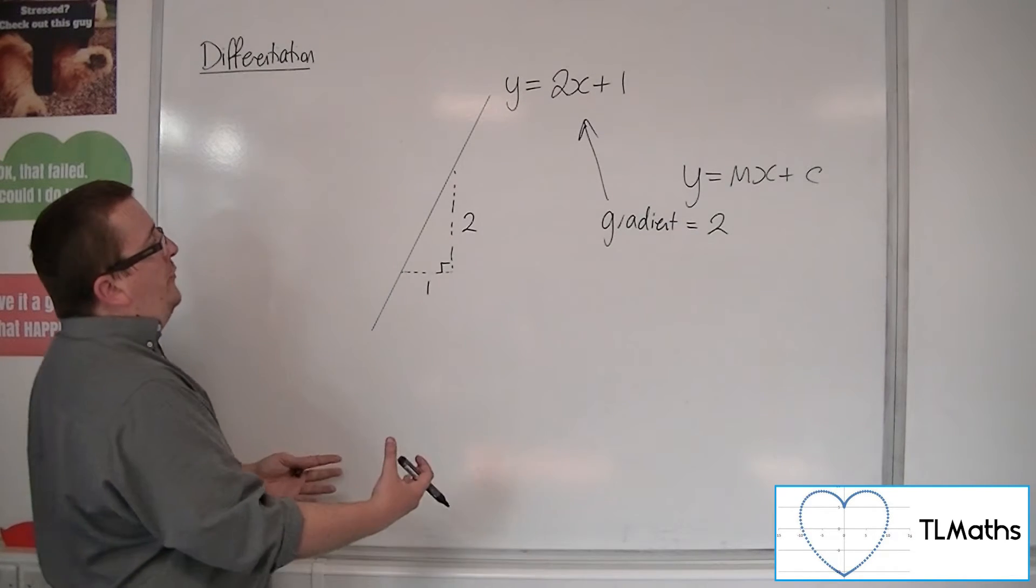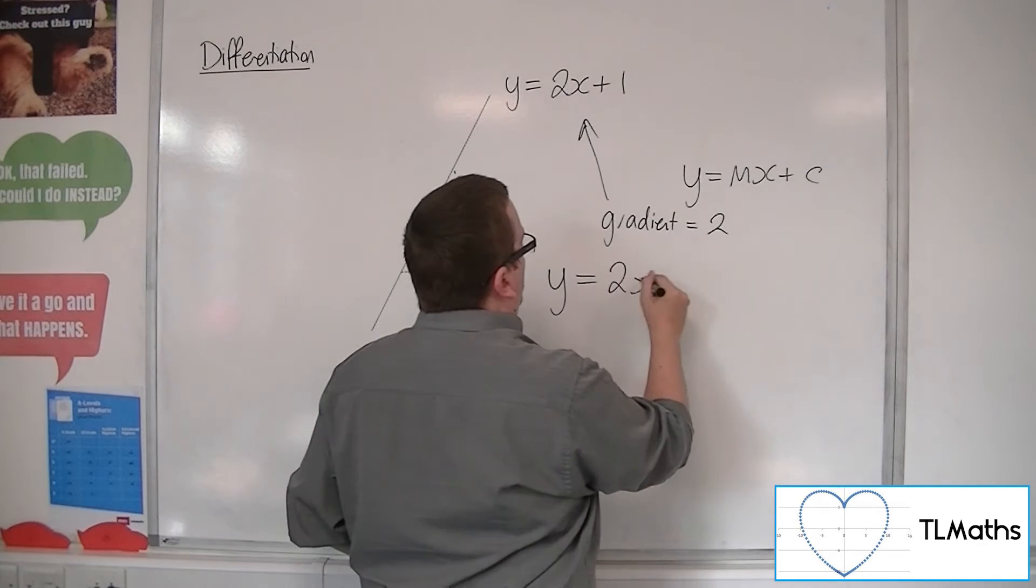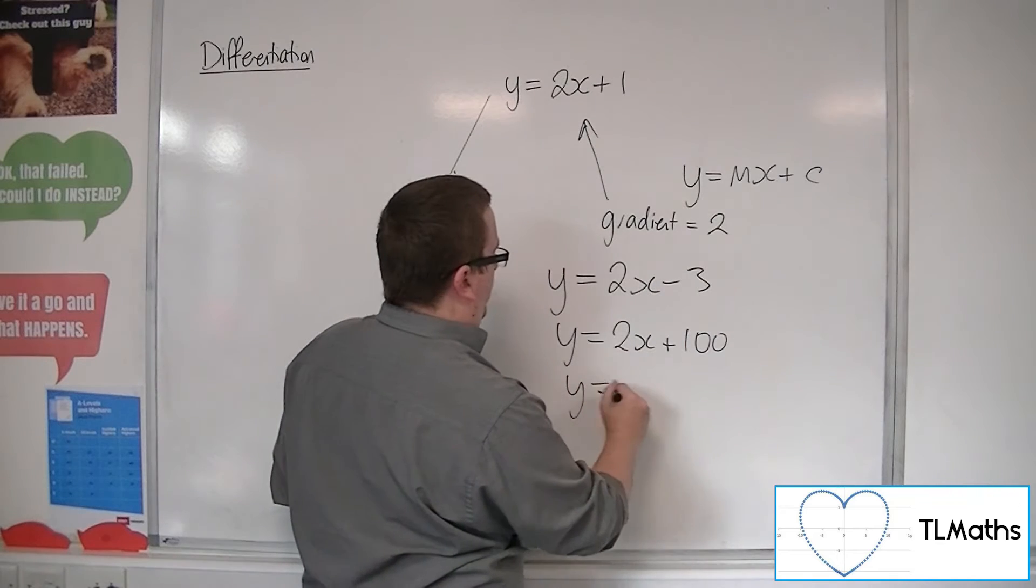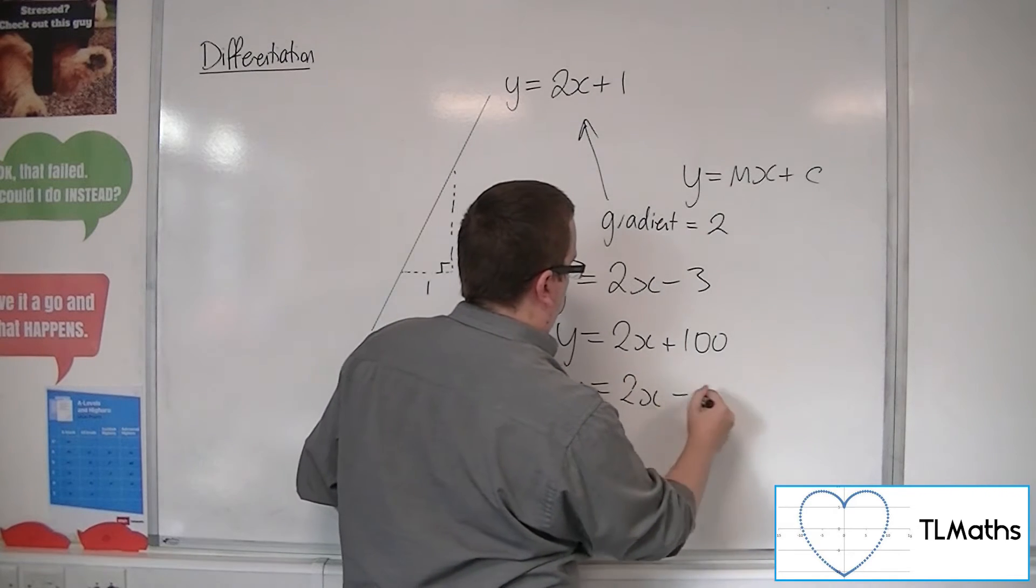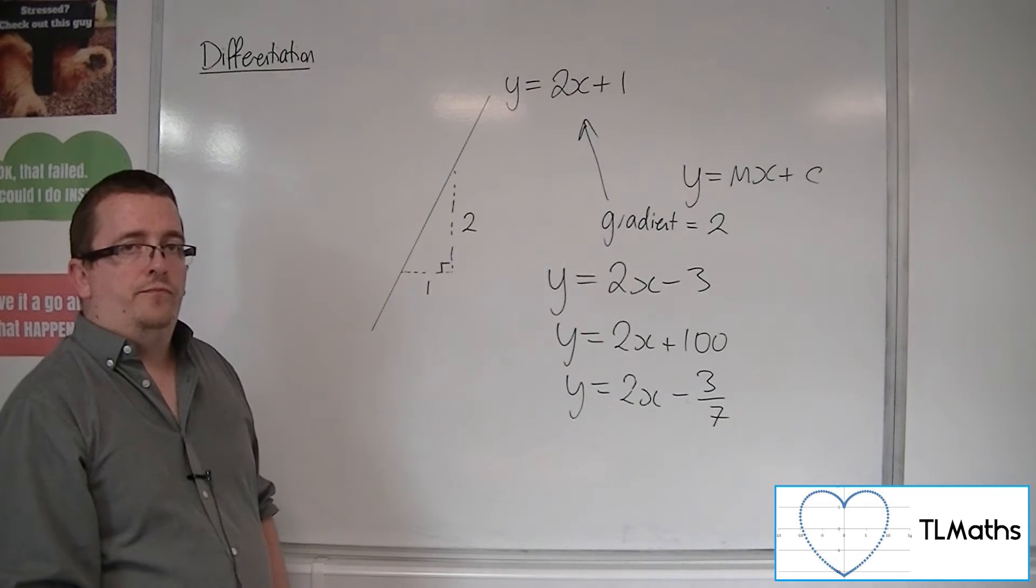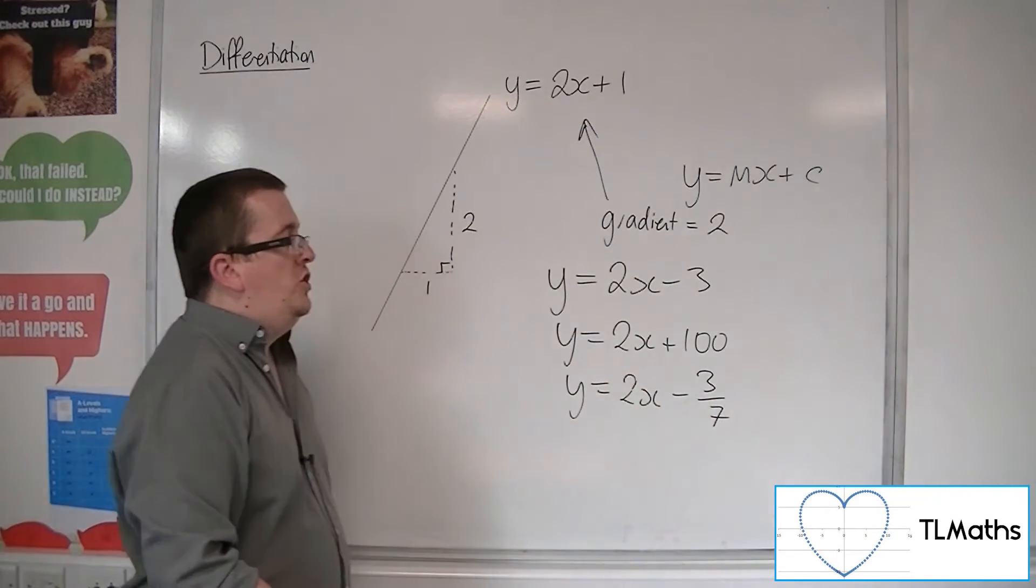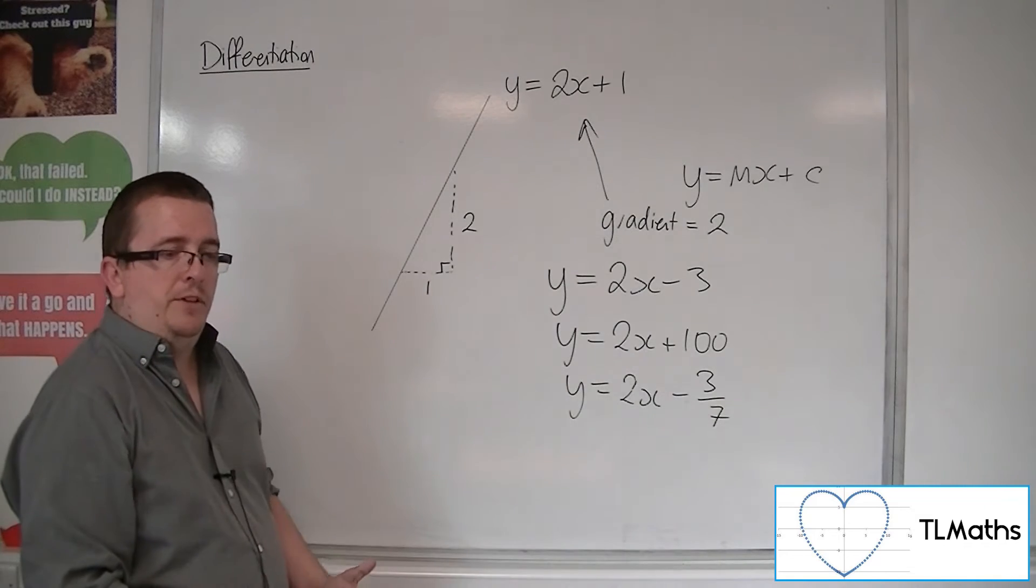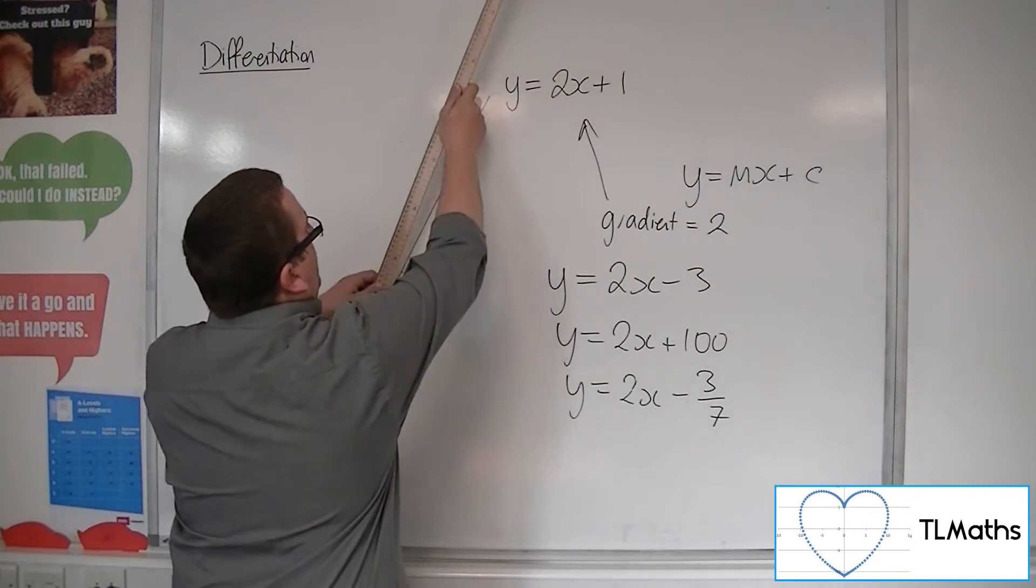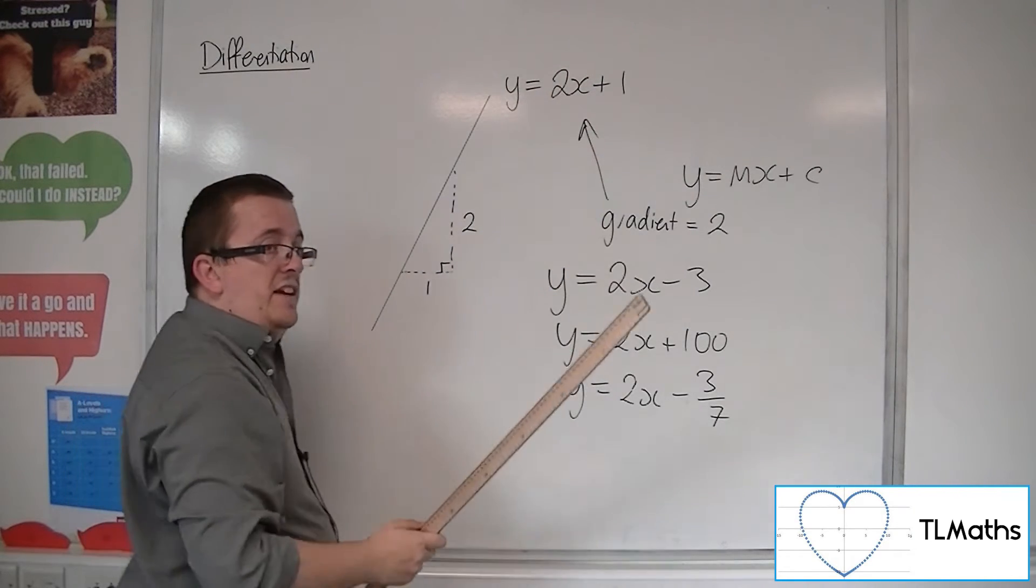Now, I also know that if I'm asked the gradient of any of these lines, that in every single case, the gradient is 2. So this number that is on the end, which is just the y-intercept and just tells you how high up on the graph the line is, the gradient is unchanging.